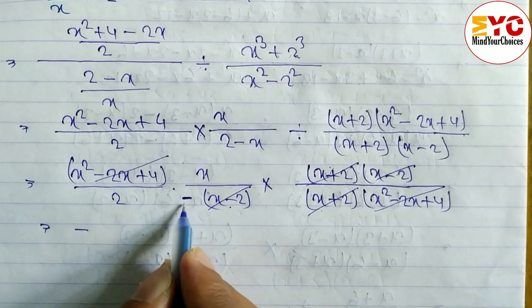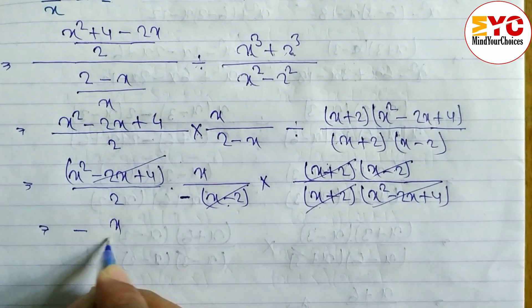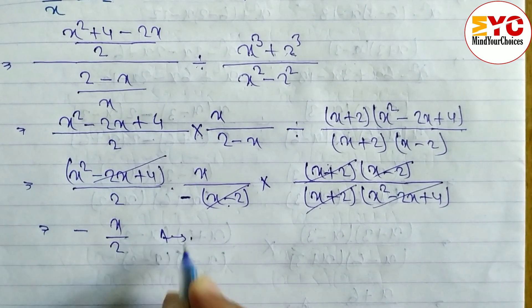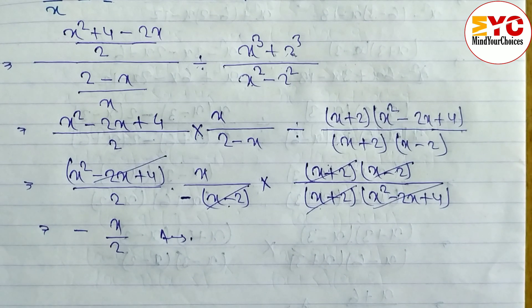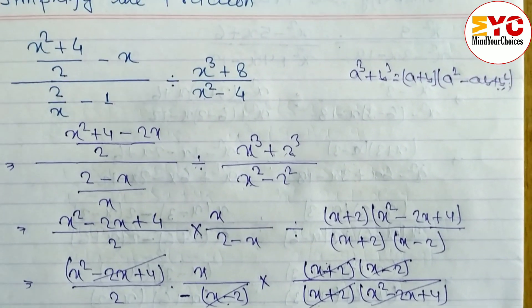So we don't leave this minus, we have to write minus x by 2. So -x/2 is the answer. Hope you understand this question related with the multiplication and division of rational expression or simplify the fraction or reduce into lowest term.